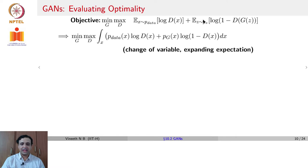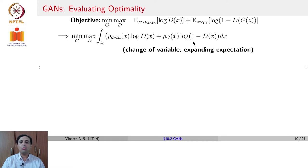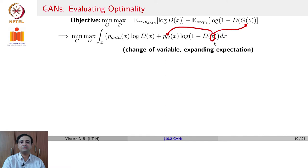If we expand out the expectation, we now have min over g, max over d, integral over x of p_data(x) log d(x) dx, plus p_g(x) — the generated distribution — log of 1 minus d(x) dx. We are assuming that this x here is generated data, defined as p_g(x). This is simply an expansion of the expectation term as an integral.